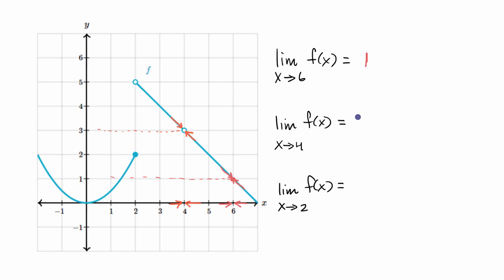So I would say, at least from what we can tell from the graph, it looks like the limit of f of x as x approaches four is three — even though the function itself is not defined there.